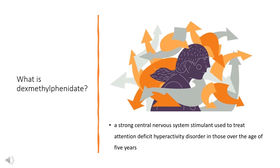Dexmethylphenidate was approved for medical use in the United States in 2001. It is available as a generic medication. In 2020, it was the 130th most commonly prescribed medication in the United States, with more than 4 million prescriptions.